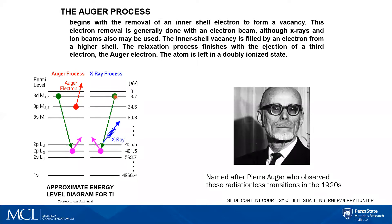In one case, when the electron drops into the core vacancy, an x-ray photon will be emitted and that process is referred to as x-ray fluorescence. In the other case, when the outer shell electron drops into the core vacancy, the atom releases an electron from another shell in the atom and that electron is called an Auger electron.